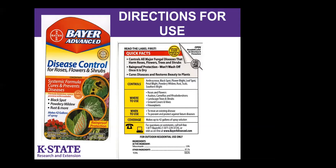Let's go to directions for use — the part of the label we're all most familiar with. It tells you what the product controls and where you are to use it, and talks about the rate or dose. For this Bayer Disease Control for roses, flowers, and shrubs, you can use it on roses, flowers, azaleas, camellias, rhododendrons, landscape trees and shrubs, ground covers, vines, and house plants — but you do not see any edible crops. If you were to spray your garden, that would be an off-label use and illegal.